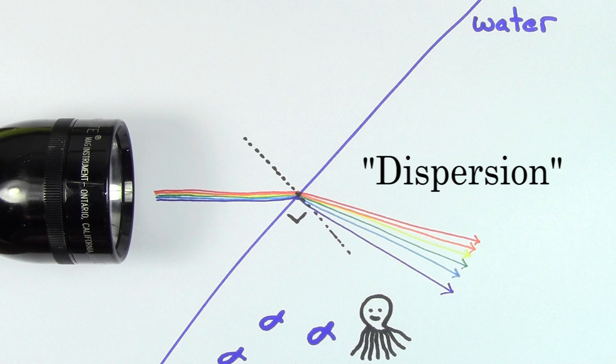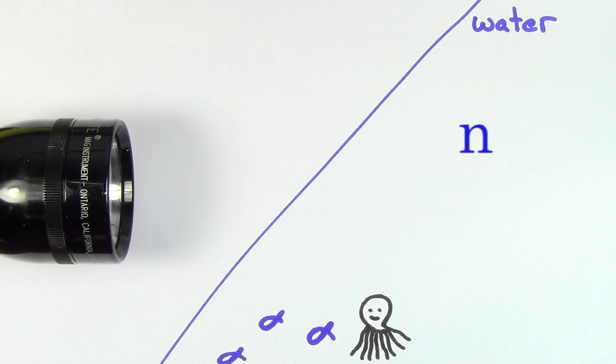So why does dispersion happen? The reason for dispersion is that the index of refraction for water and most other materials is actually a function of the wavelength of the light.